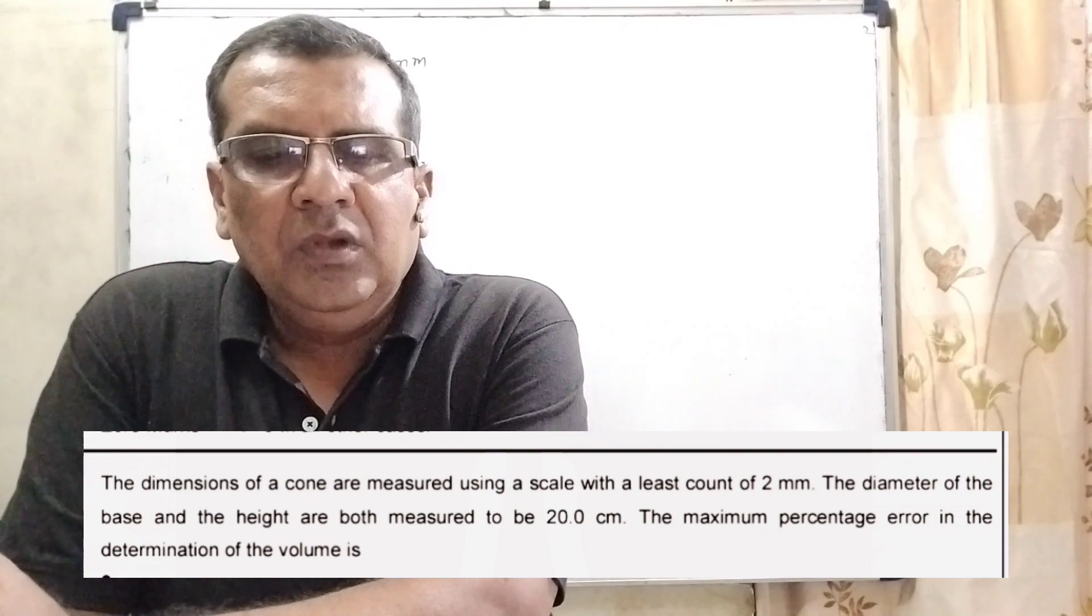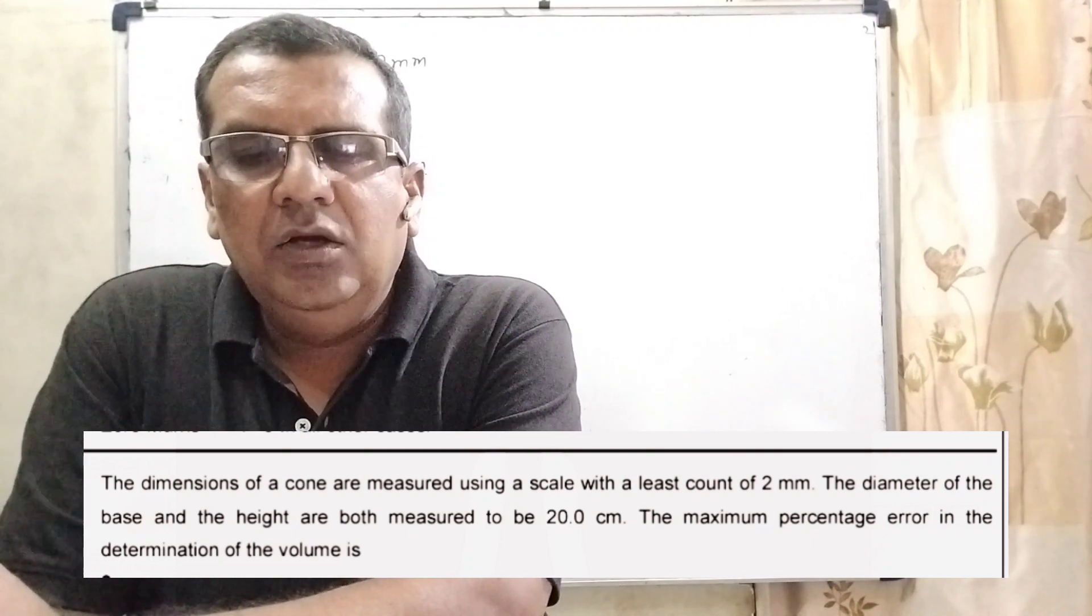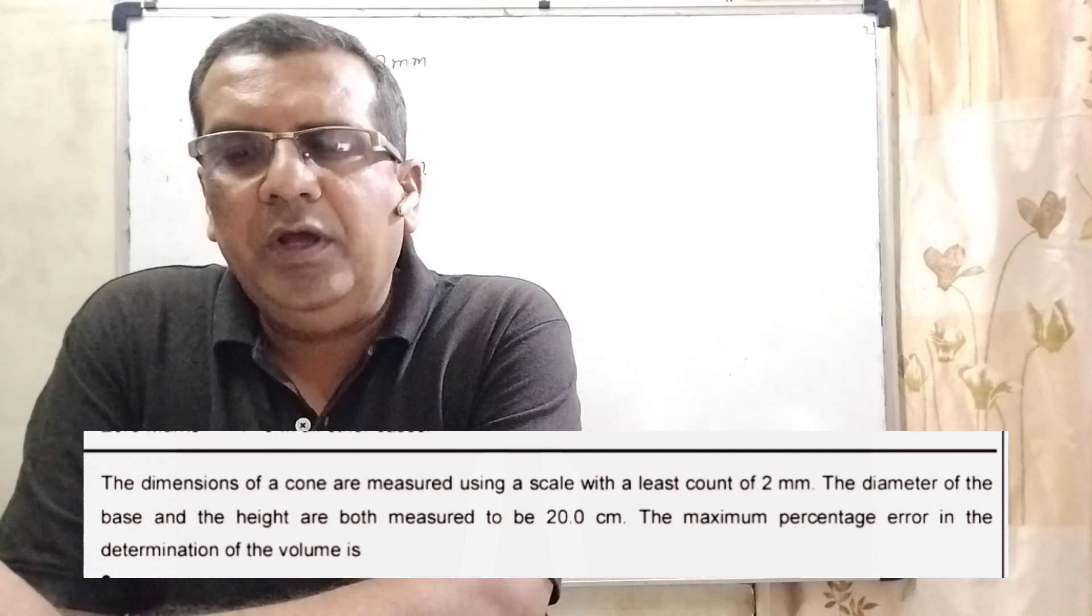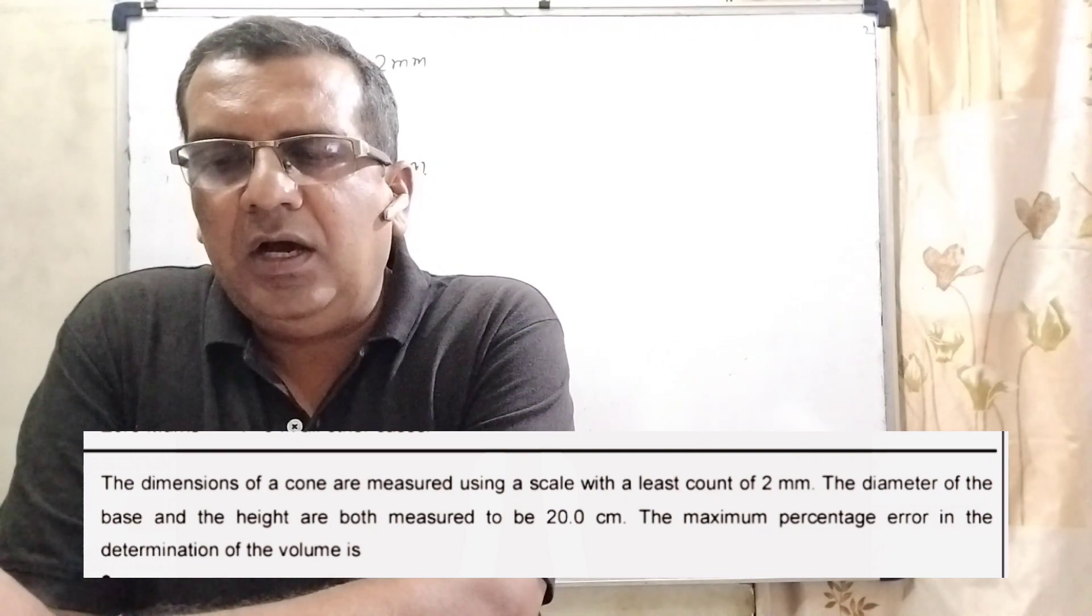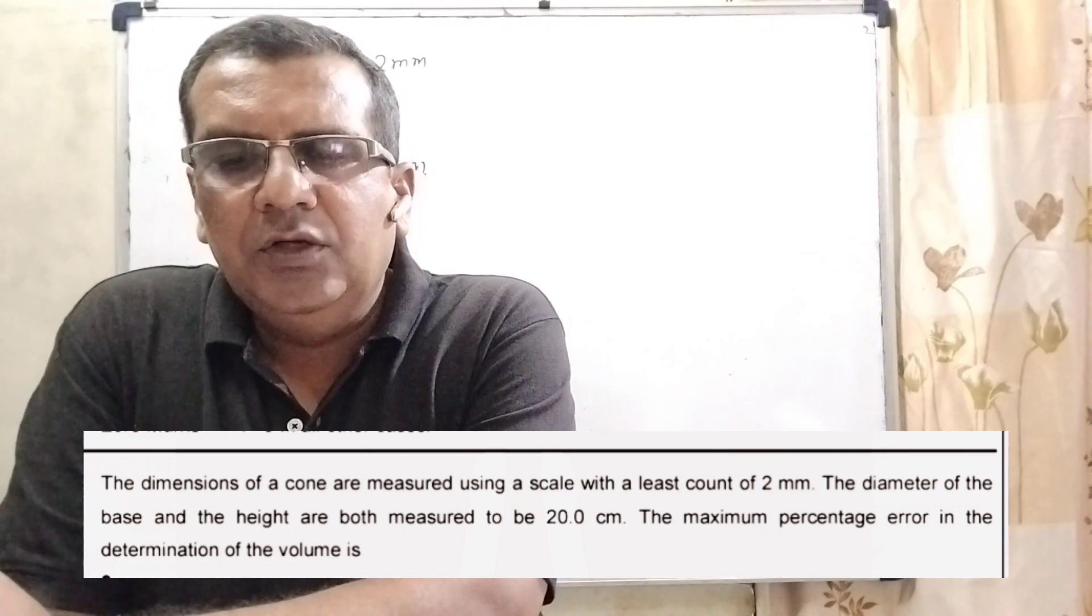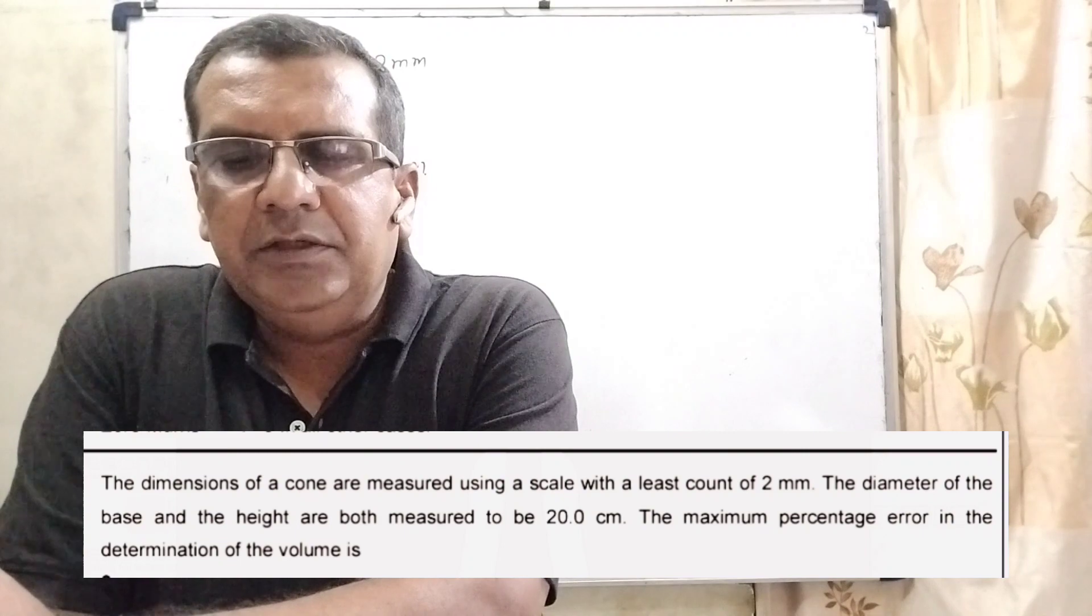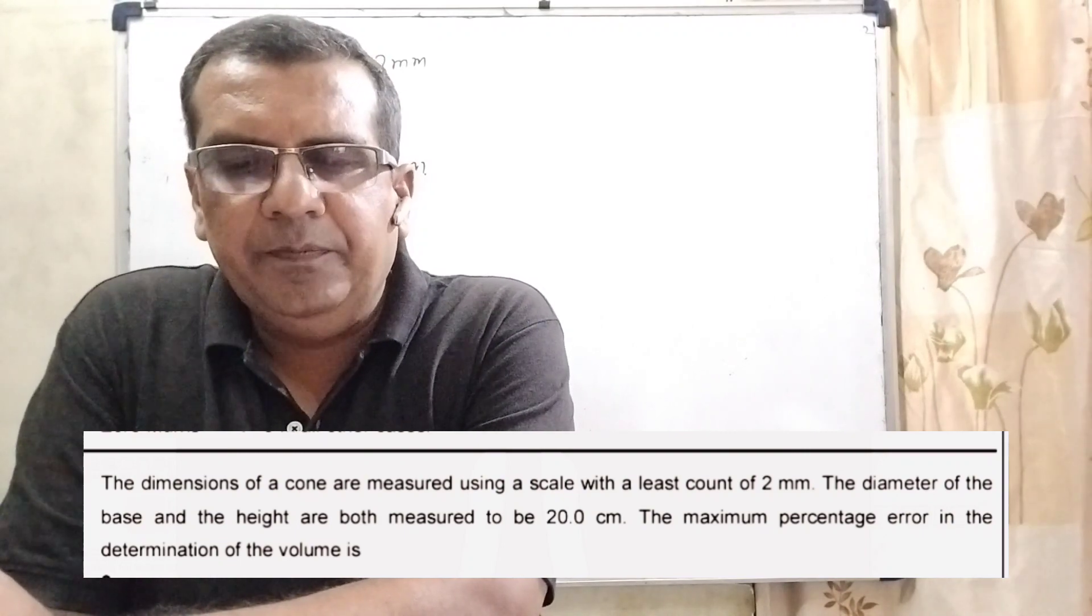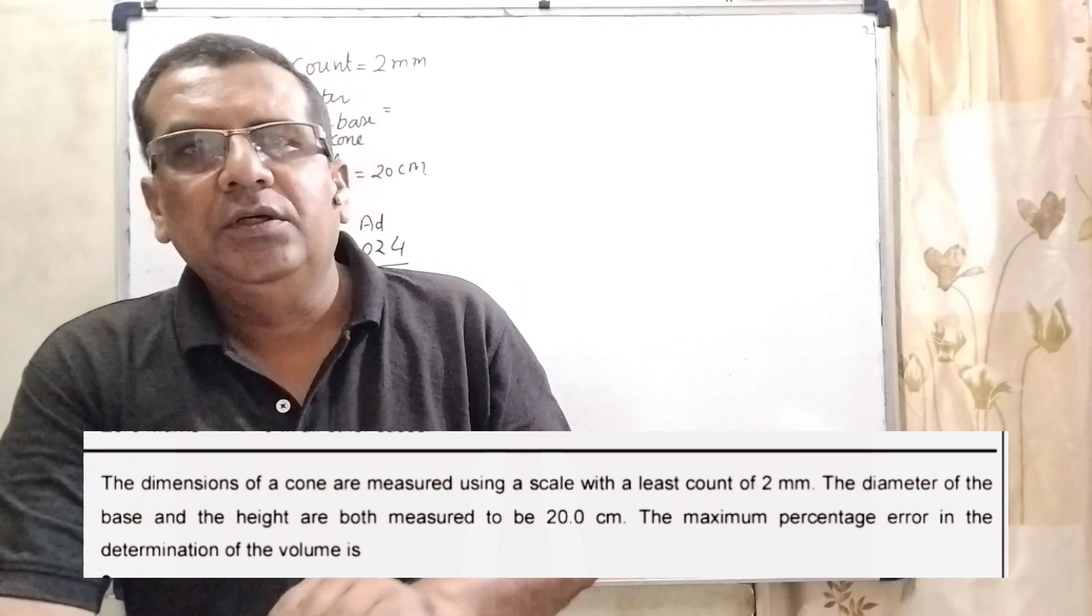Now here is the question. The dimensions of a cone are measured using a scale with the least count of 2 mm. The diameter of the base and the height are both measured to be 20 cm. The maximum percentage error in the determination of the volume is. This question is asked in JEE Advanced 2024.